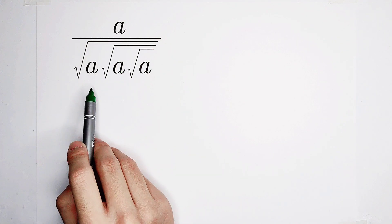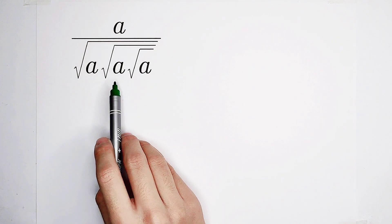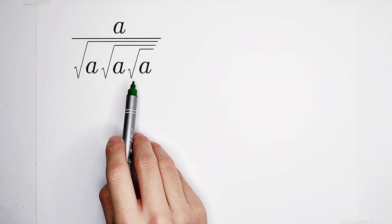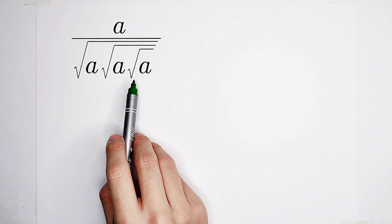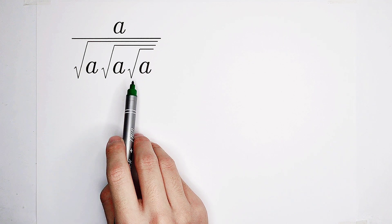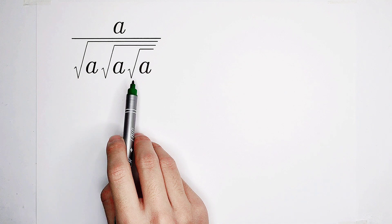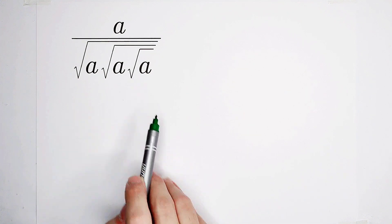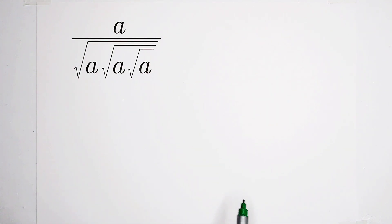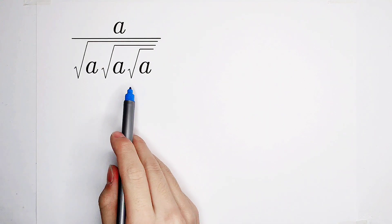Simplify a over the square root of a times square root of a times square root of a. Oh my god, so complicated. So we have to simplify it. But how? Have a look at the denominator.